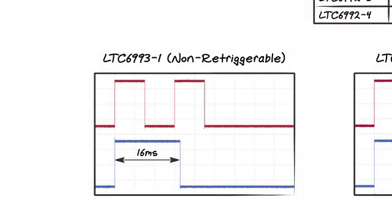The first photo shows an LTC6993-1, a non-retriggerable part, set up to produce a 16 millisecond wide pulse. And it's being hit with two rising edges in quick succession.